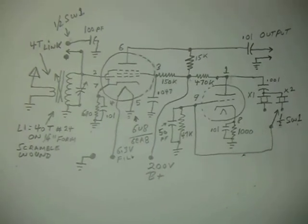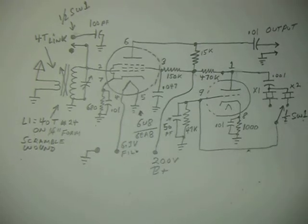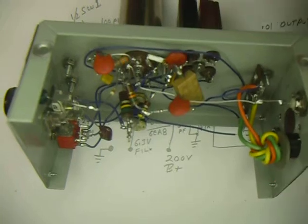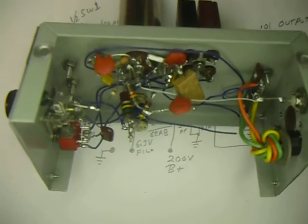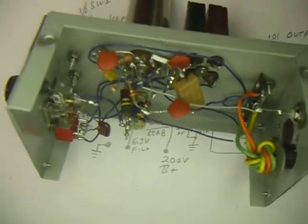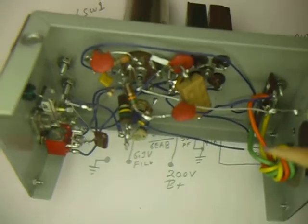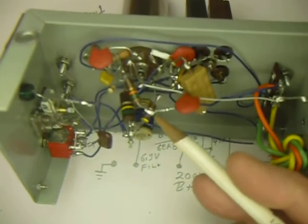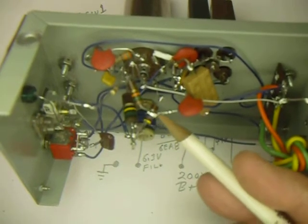So that's the circuit there, and then this is the converter. Here's that 470k resistor I was telling you about.